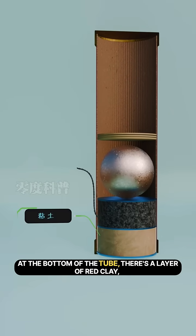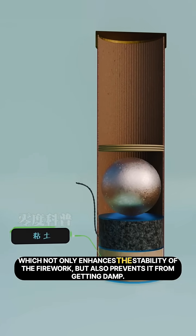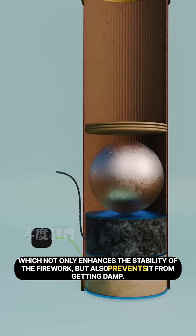At the bottom of the tube there's a layer of red clay, which not only enhances the stability of the firework, but also prevents it from getting damp.